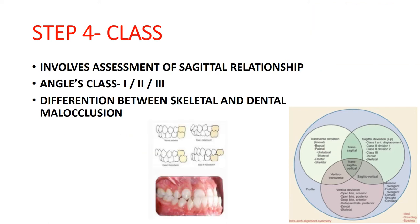Step 4 involves the sagittal or antero-posterior relationship — the adjacent smaller circle. This involves assessment using Angle's classification: Class 1, Class 2 Division 1, Class 2 Division 2, or Class 3. It also helps differentiate whether the malocclusion is a skeletal or dental problem.